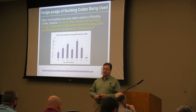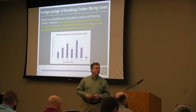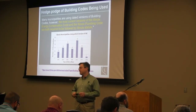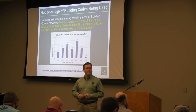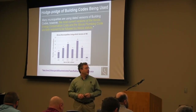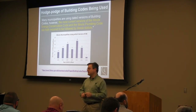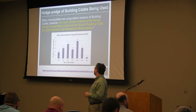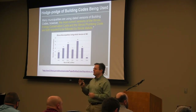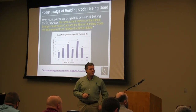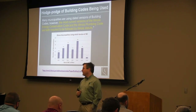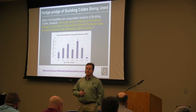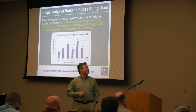Looking at code adoption across Illinois, most codes are adopted at the local jurisdictional level, so there's quite a spread of building codes across the state. The most common presently is the 2012, followed by the 2006 versions — almost a bell curve, with a dip at 2009. Just last week, the city of Chicago adopted a new building code, leaving their dedicated Chicago code and moving to the I-codes.